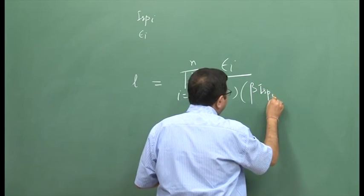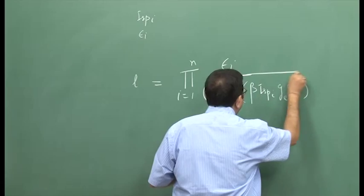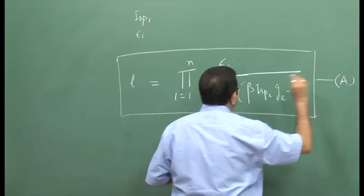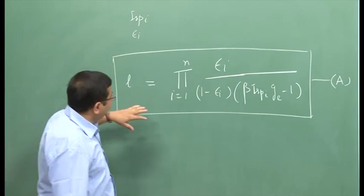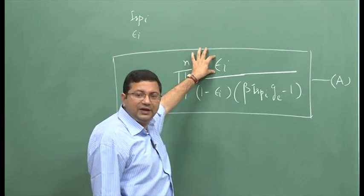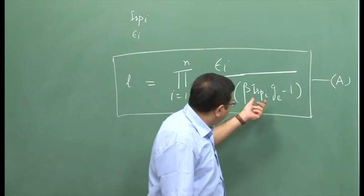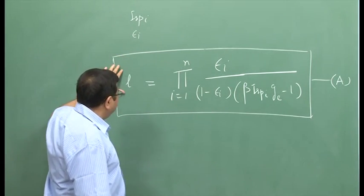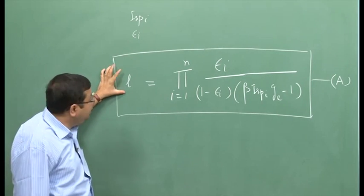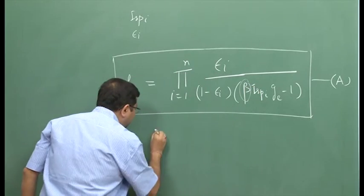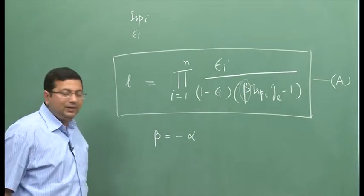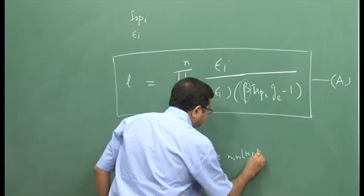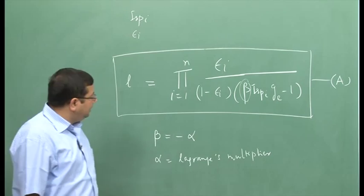We derived this expression in the last lecture — let me call it Equation A, because it is very important. In this equation, ε_i represents the structural coefficient of various stages, and ISP_i represents the specific impulse for different stages. These are the given values. L is the overall payload mass fraction, which is also given. The parameter beta is defined as minus alpha, where alpha is our Lagrange multiplier used to achieve the optimization.